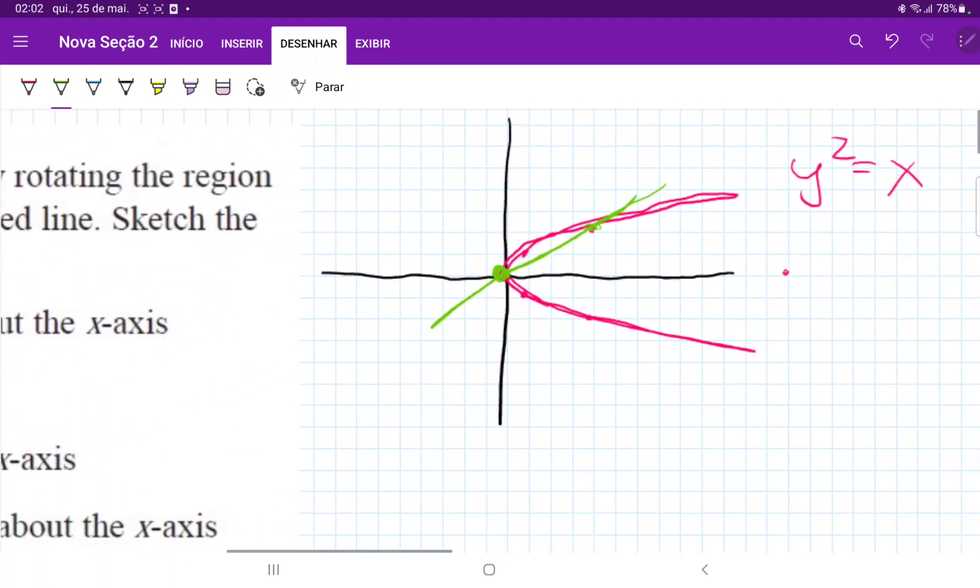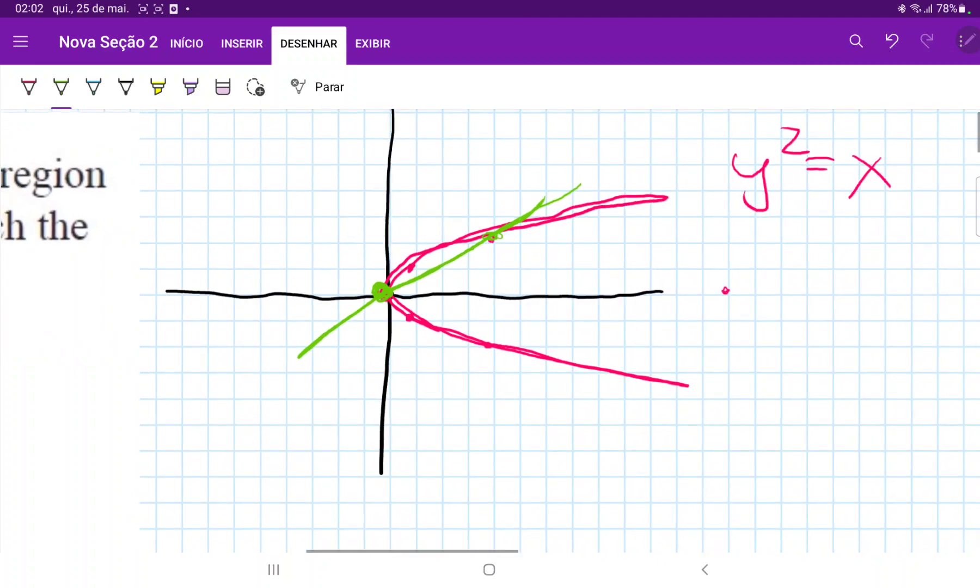So I'm going to have to zoom in so you guys can see that the area between them is this little section here. And we're going to revolve it about the y-axis. So to revolve it, it kind of looks something like this. These little disks, right?